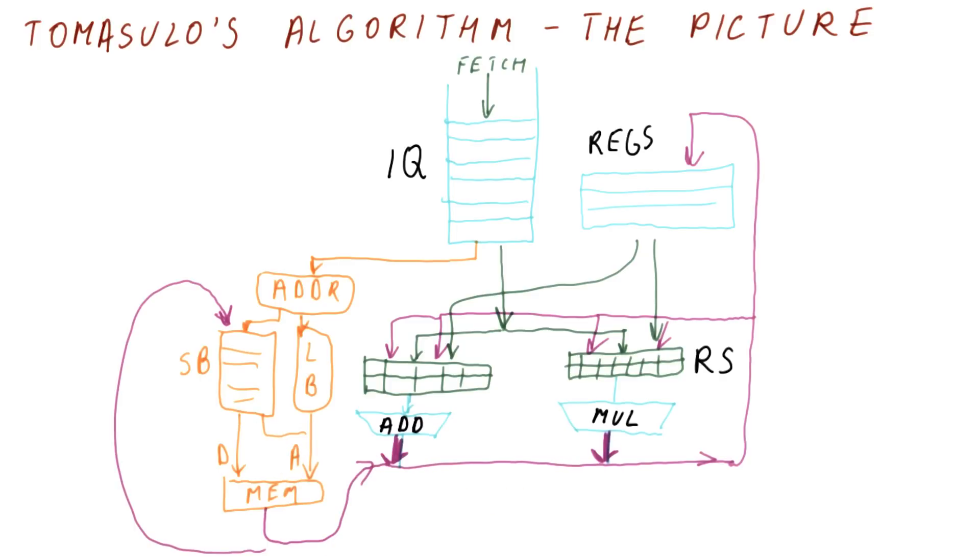A store instruction that needs to put a value in memory is going to wait for its floating point value that needs to be placed in memory until it becomes available, and only then be sent to memory.